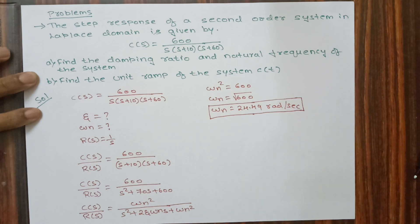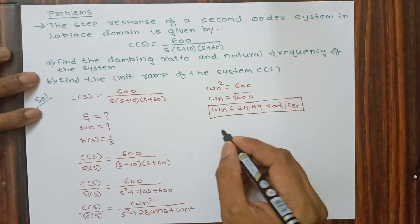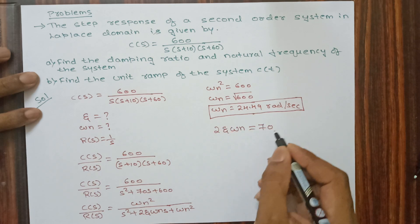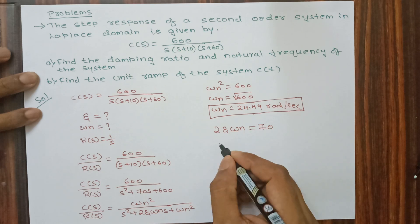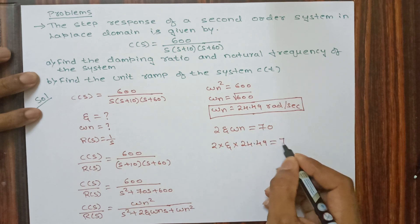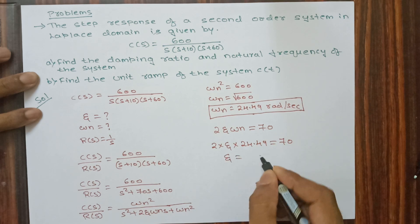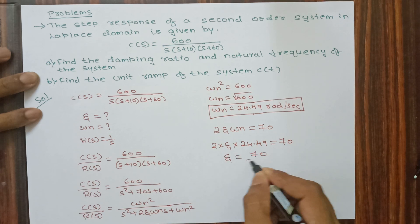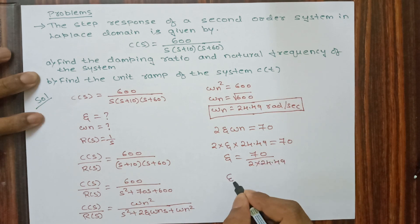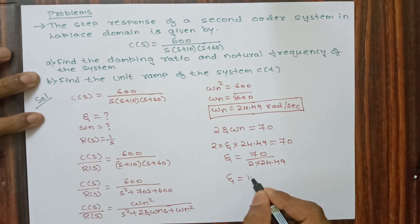For the damping ratio zeta, we compare the s coefficient: 2ζω_n = 70. We know omega_n = 24.49, so substituting: 2 × ζ × 24.49 = 70, giving zeta = 70 / (2 × 24.49) = 1.42.